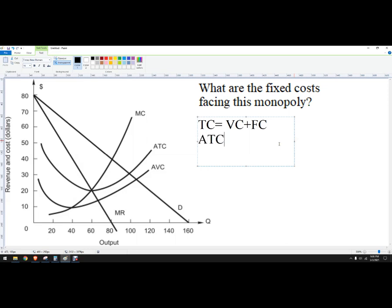Knowing that relationship, we also know that average total cost equals average variable cost plus average fixed cost.